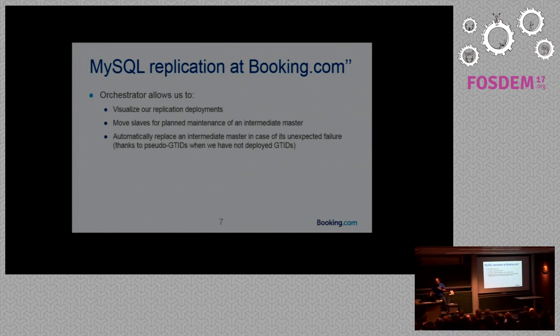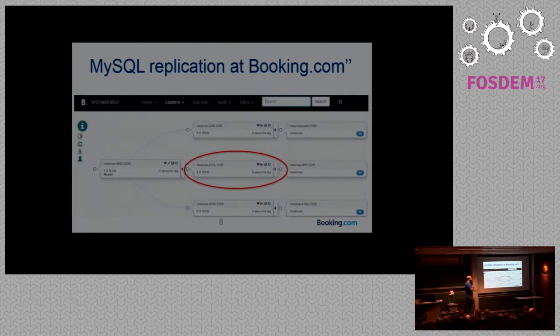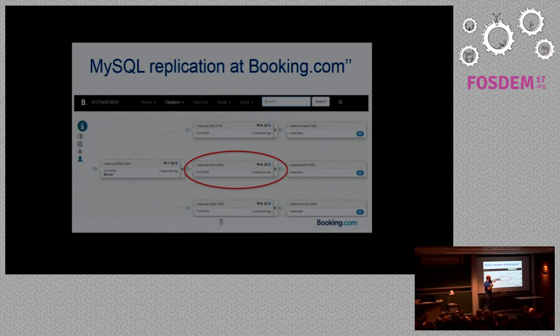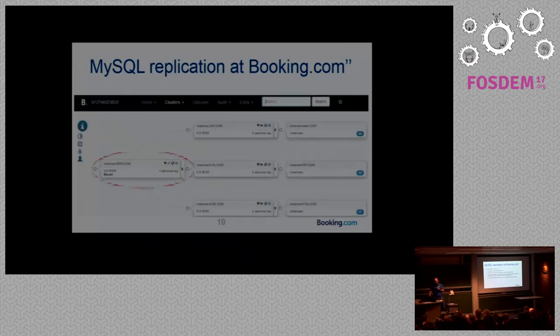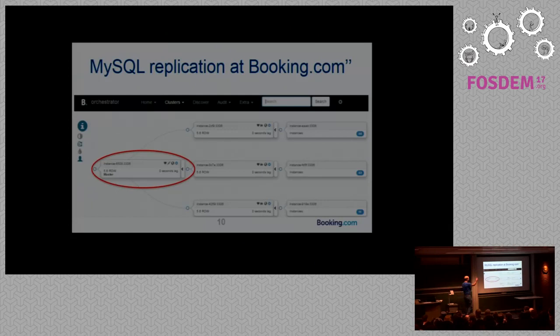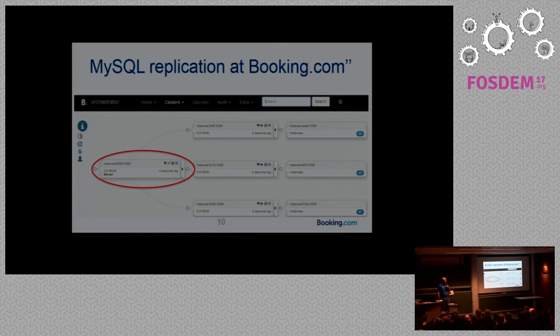We use orchestrator. Orchestrator allows us to visualize our replication deployment, move slaves from one intermediate master to another, and it also does some automation. It can automatically replace an intermediate master if it fails. If we have that node that is failing, orchestrator will see that and fix things. It will point the slaves back to other intermediate masters or promote a new intermediate master. And also, orchestrator automatically replaces a master when the master fails.